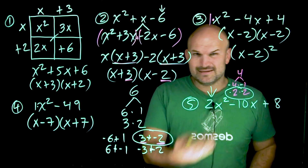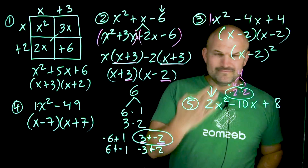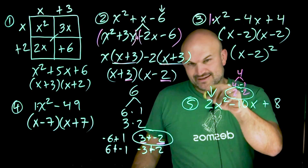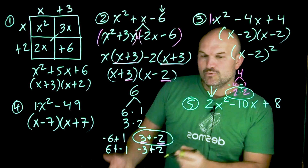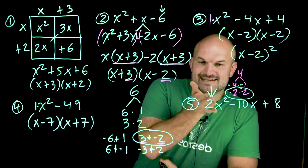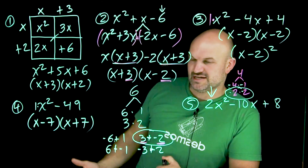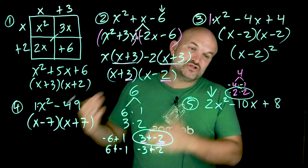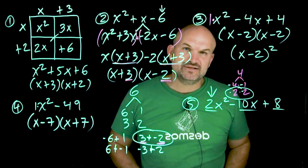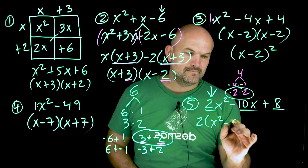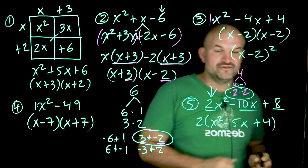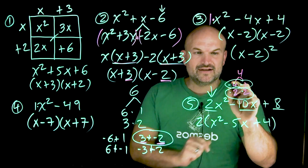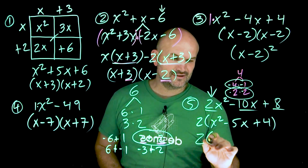What if there's a leading coefficient that isn't 1? You can't simply find two numbers that multiply to 8 and add to −10 when you have 2x² − 10x + 8 — that process only works when a = 1. But before giving up, always check for a GCF. All three terms are divisible by 2, so factor out the 2 to get 2(x² − 5x + 4). Now with a positive 4 and a middle term of −5, the factors are −4 and −1 since −4 + (−1) = −5, giving a final answer of 2(x − 4)(x − 1).